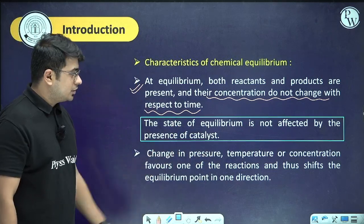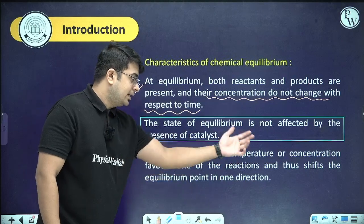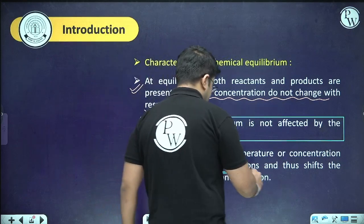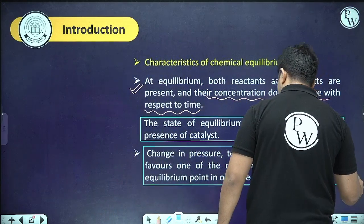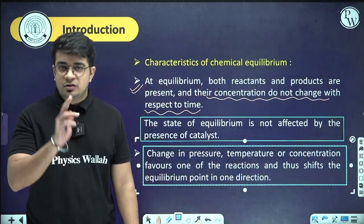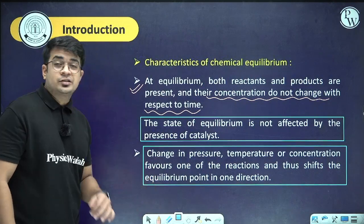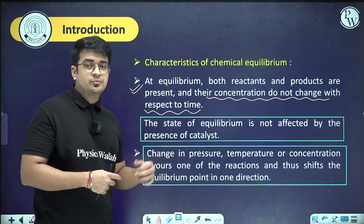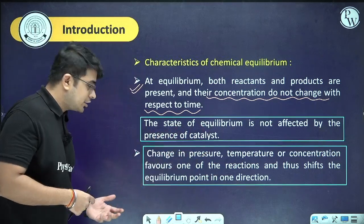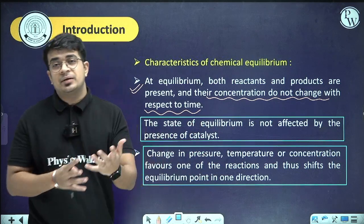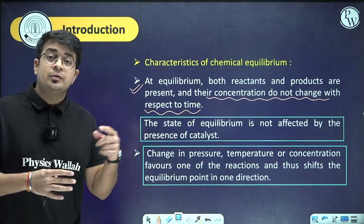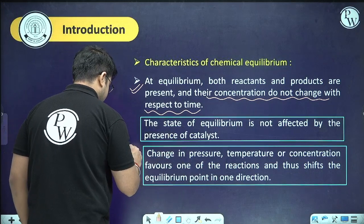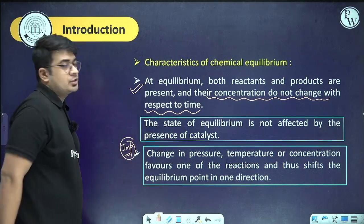A change in pressure, temperature, or concentration favors one of the reactants and thus shifts the equilibrium point in one direction. This is very important and will be discussed in lecture three on Le Chatelier's principle — what happens when we change pressure, temperature, or concentration of any product or reactant, and whether the direction of equilibrium shifts.